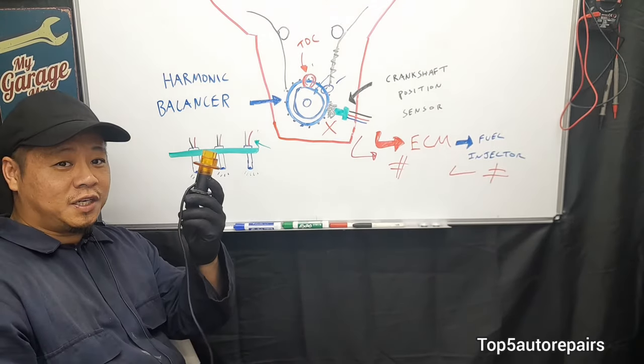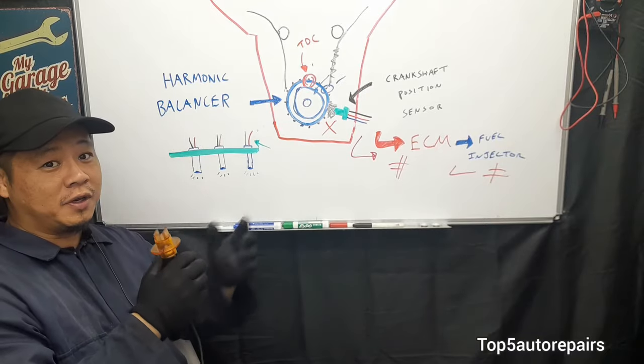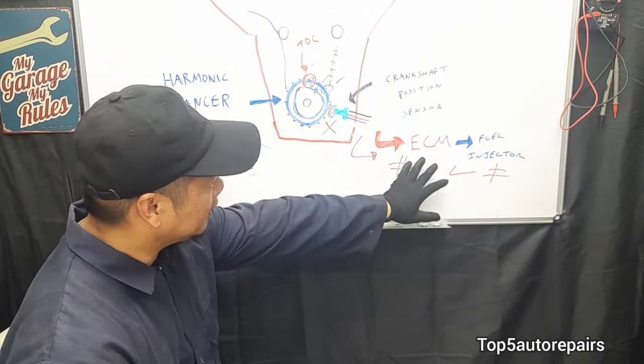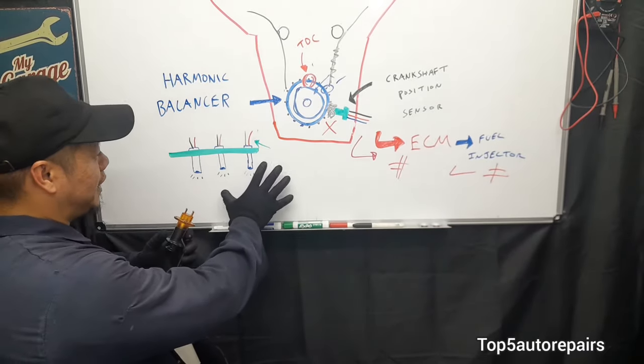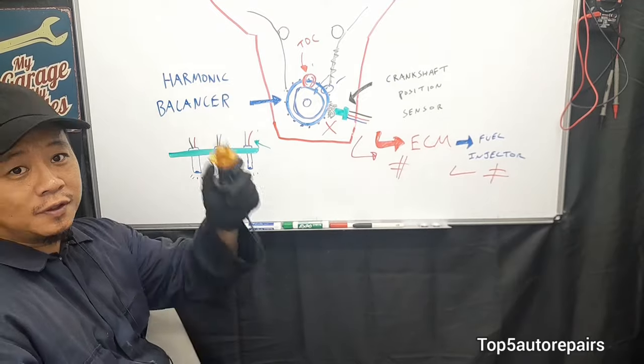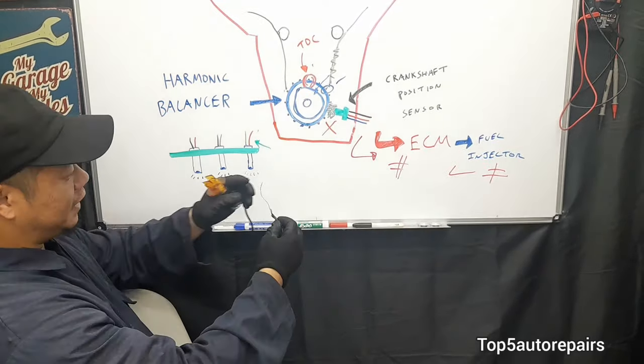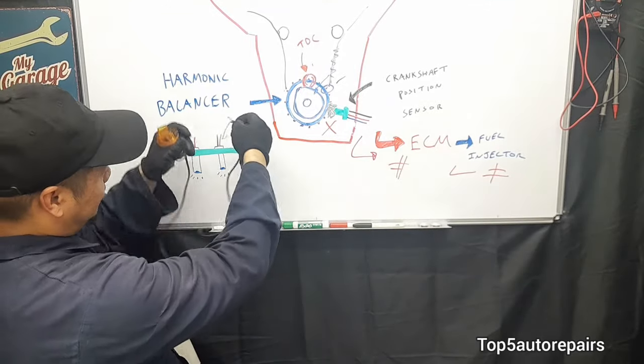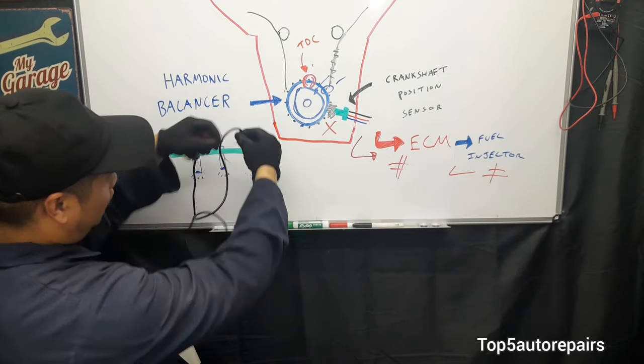The quickest way to check if your crankshaft position sensor is failing is to use a noid light. What we learned earlier is that the ECM commands the fuel injector to fire. Every time this fuel injector is commanded, it should give some sort of signal or power. If you take this noid light and connect it to one of the wires, another one on the other,